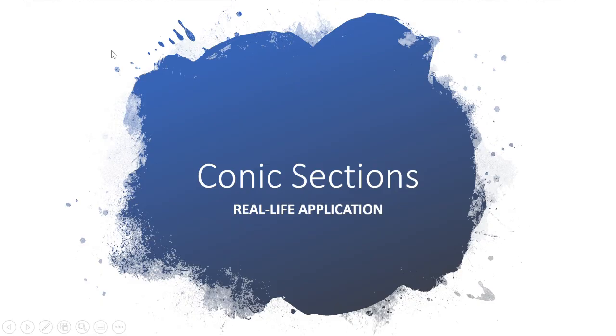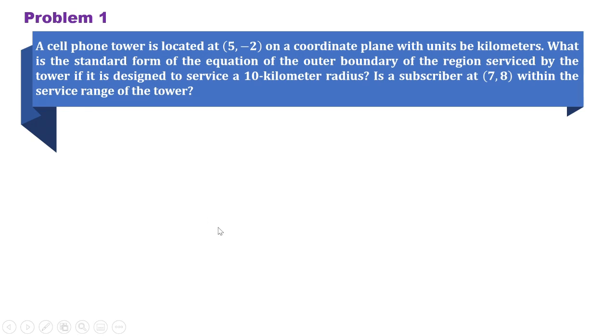This video covers word problems involving conic sections. Let us try to answer problem number 1. Let's say this is the location of the cell phone tower at 5, negative 2.